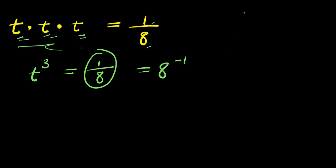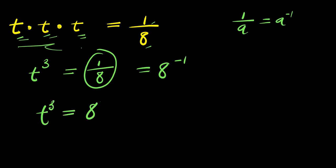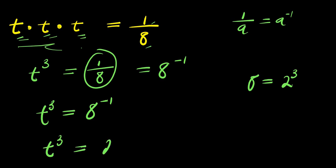Remember this identity: if you have 1 over a, this equals a to the power negative 1. So if I do that, I'm going to have t to the power 3 equals 8 to the power negative 1. And remember, 8 equals 2 to the power of 3. So from here, I can have t to the power 3 equals 2 to the power of 3, raised to the power of negative 1.